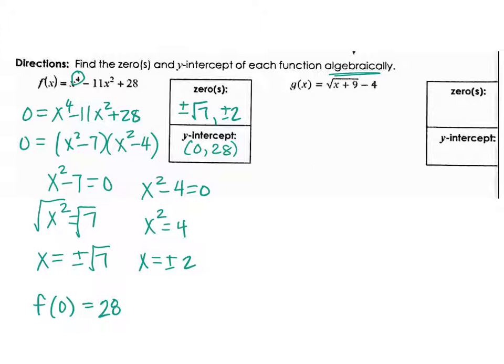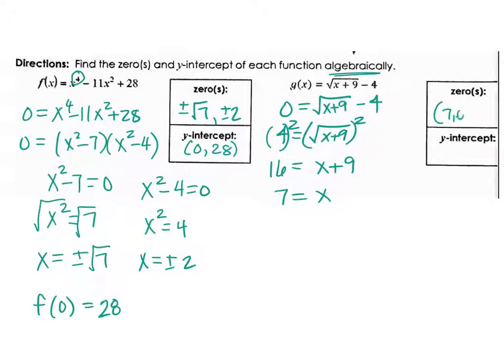Over on the other one, same process again. So this time we're going to let g(x) be 0 – you have the square root of x plus 9 then minus 4. We're going to add our 4 over – and this time instead of doing the square root we need to square it. So be careful with that – you don't put a plus or minus here – you're just squaring both sides. And then we're going to subtract our 9 over so x is 7 – so there's our 0 – it's going to be (7,0) – or you can just write 7, either one.